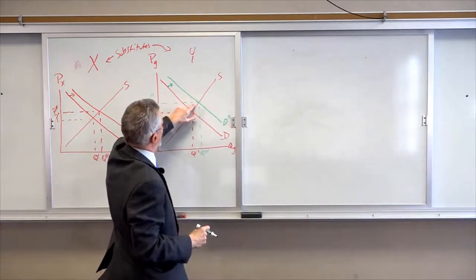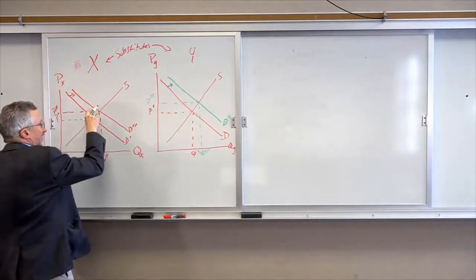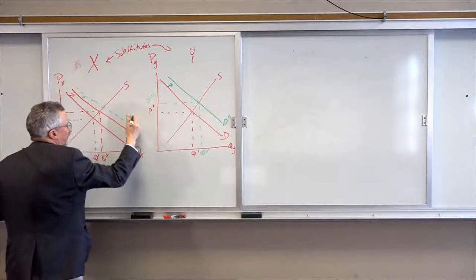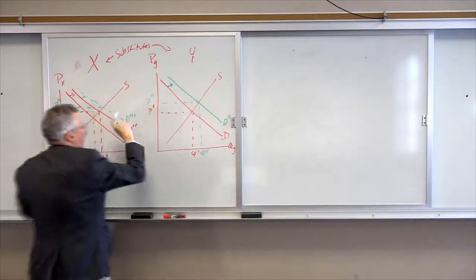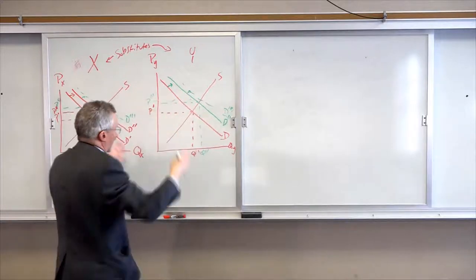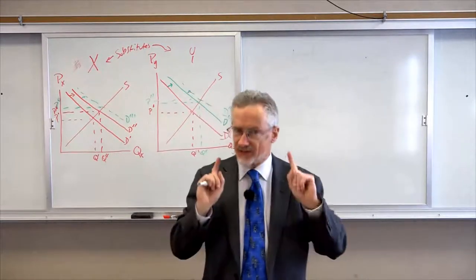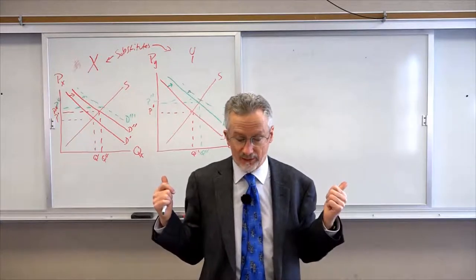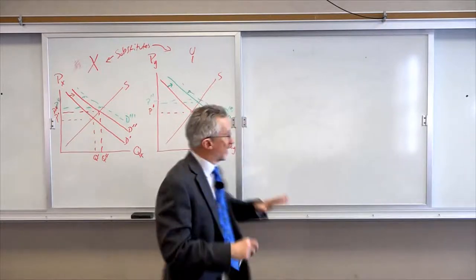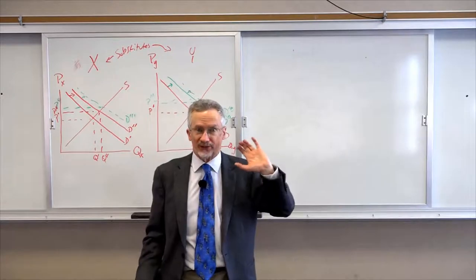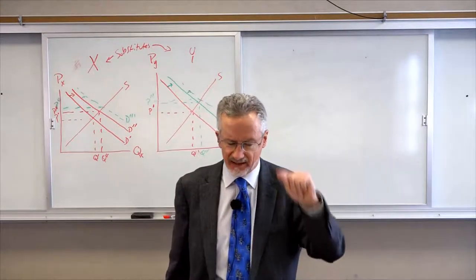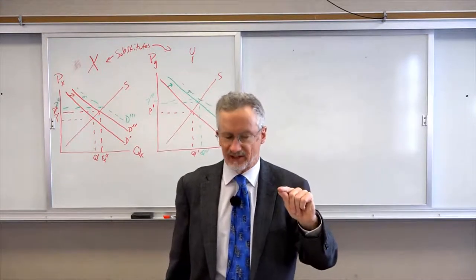Well, wait a minute. The price of Y just went up and it's a substitute — so this demand has to shift up even more to D triple-prime. That drives the price of this one up, but that means the demand over here must be going up to D triple-prime, and so on, et cetera. That's wrong — that's not the way to utilize these models. But you all know that what I've just told you makes total sense. This is Leon Walras's criticism of Marshall's ceteris paribus approach: you can't hold those things constant because that's not the way the economy works.